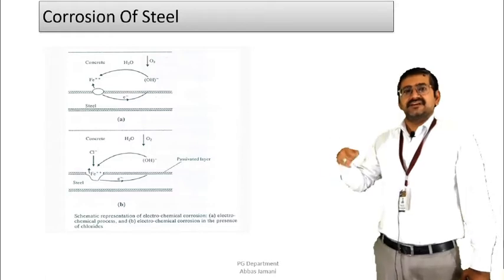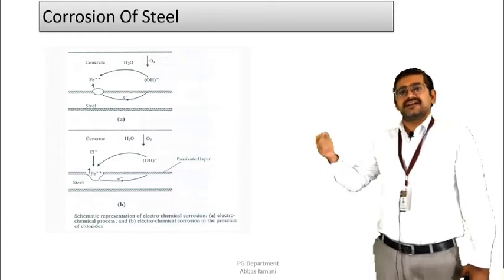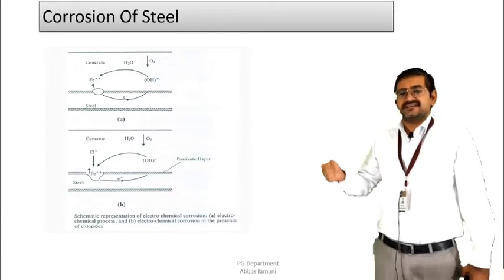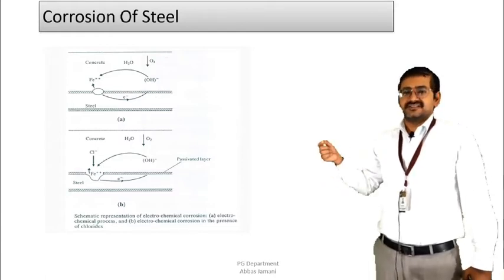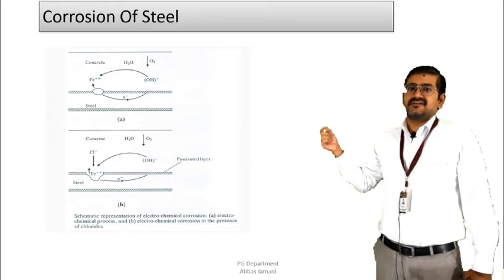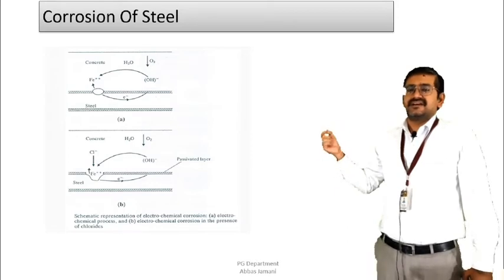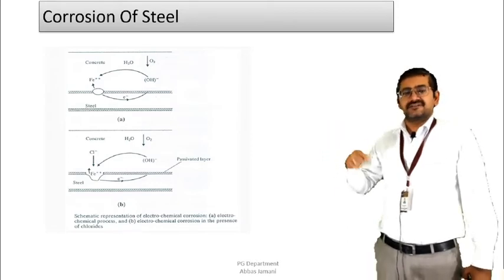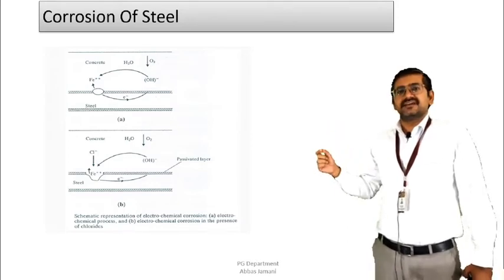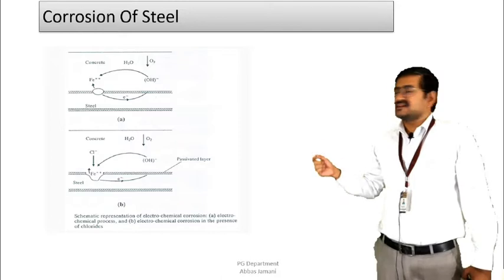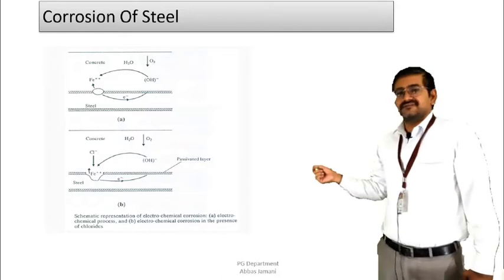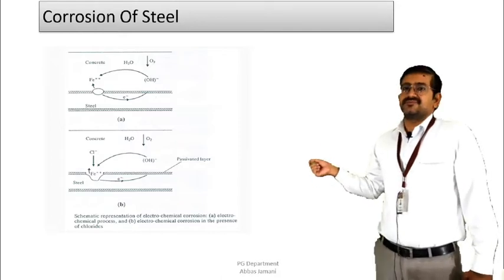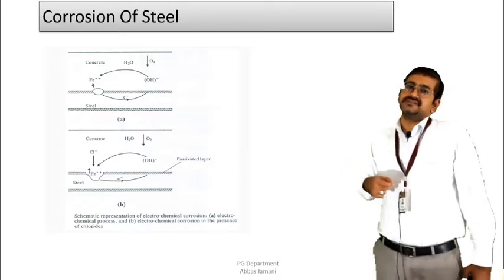This passive layer is broken due to any of these attacks taking place. Once this is broken, the direct contact of the reinforcement with the surrounding atmosphere takes place, and from there the process of corrosion is initiated.